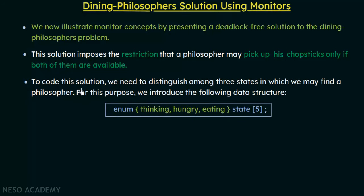In order to code this solution we need to distinguish among the three states in which we may find a philosopher. He could be in the thinking state, where he is just thinking and not interacting with colleagues; or the hungry state, where he wants to pick up chopsticks for eating; or the eating state, where he has picked up both adjacent chopsticks and started eating.